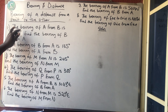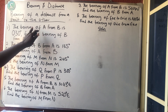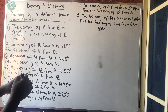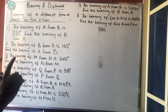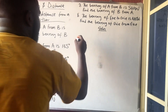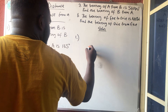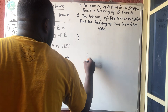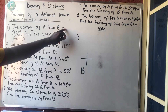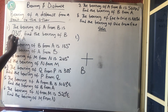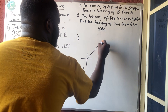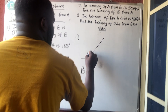The first question said: the bearing of A from B. Please take note of 'from' — not the place mentioned first, but the place 'from'. So the bearing of A from B: the first thing we are drawing is B itself. We are drawing B, and they said that the bearing of A from B is 030 degrees. It will fall in the first quadrant. So 30 degrees — this is my 030 degrees.